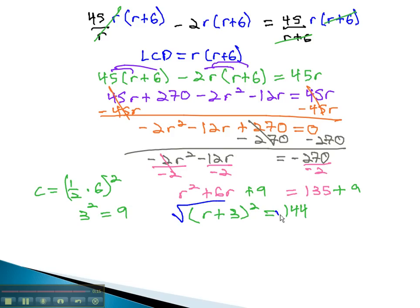Taking the square roots of both sides, we get r plus 3, equals plus or minus 12. We don't really need the minus, as we need to have a positive answer. Subtracting 3 gives us her rate of 9 miles per hour.